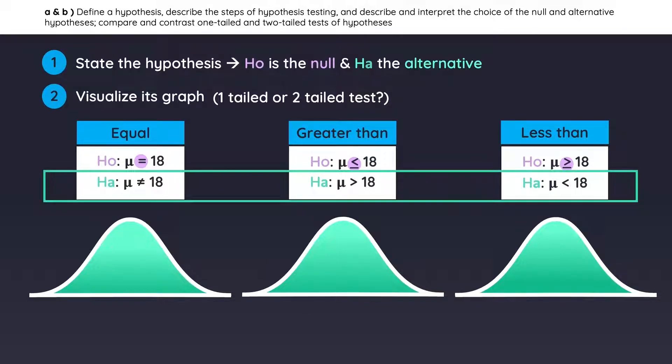If it is testing for equality, it's a two-tailed test. If it is greater than, it's a right-tailed test, and if it's less than, it's a left-tailed test.